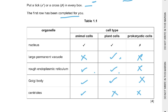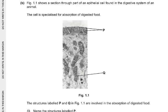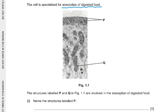Part B: Figure 1.1 shows a section through part of an epithelial cell found in the digestive system of an animal. The cell is specialized for absorption of digested food. The structures labelled P and Q are involved in the absorption of digested food. Name the structure labelled P.